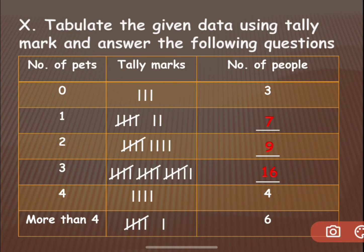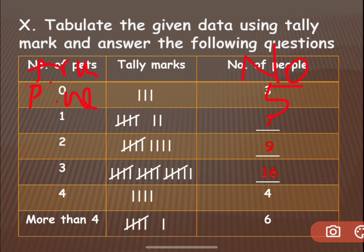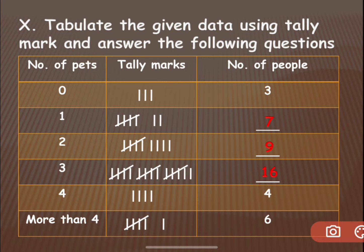For example if it is about fruits, here you will write 'Fruits', here you will write 'Tally Marks', and here 'Number of Fruits'. For example the fruit is pineapple and there are five — so you do one, two, three, four, and the fifth one like this. In that way you need to do the tally marks. The questions will be like: which fruit is more in number, which fruit is less in number, what is your favorite fruit. For any data you can look at it, table it, and answer.